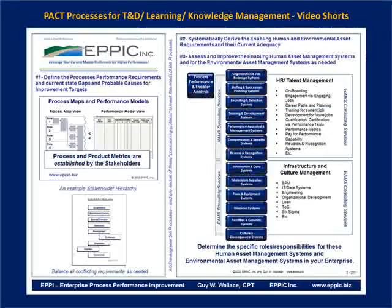So you could look at the data and information requirements, the material supplies, the tools and equipment, the facilities and grounds, the budget and the headcount, and the culture and the consequence systems that are in place in the environment — and their impact on the ability to bring a paper process to life and meet all of the stakeholder requirements.